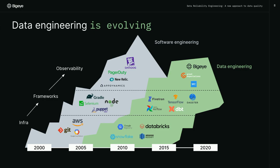In the software space, this was the same thing: I've built a lot of services, deployed them to the cloud, they're all running — but how do I know they're running and doing what I expect? Datadog, PagerDuty, New Relic, AppDynamics, Dynatrace solve this problem for software. BigEye, along with other companies, is solving this for the data space: how do you know that your data is doing what you expect it to do?